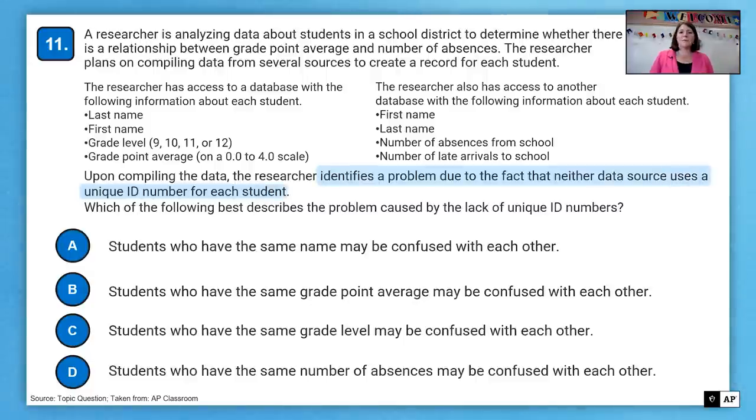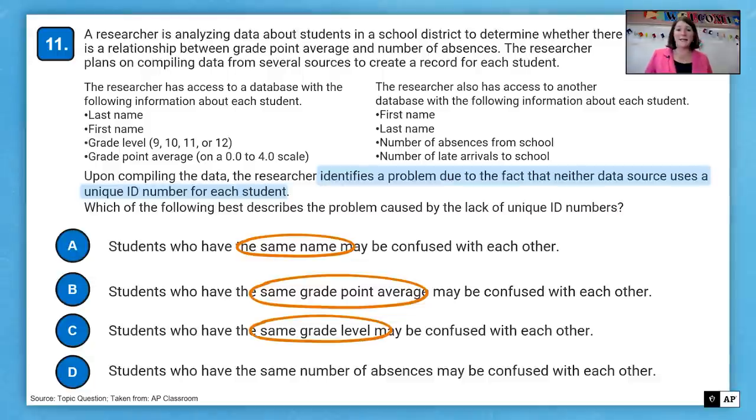Which of the following best describes the problem caused by the lack of unique ID numbers? So here's the key to this. We're looking at students have the same name, same grade point average, same grade level, or same number of absences. So which one of these is really important? Well, grade point averages can be the same. Grade levels can be the same. Number of absences can be the same. But if they have the same name, we need some way to identify that student with the same name.